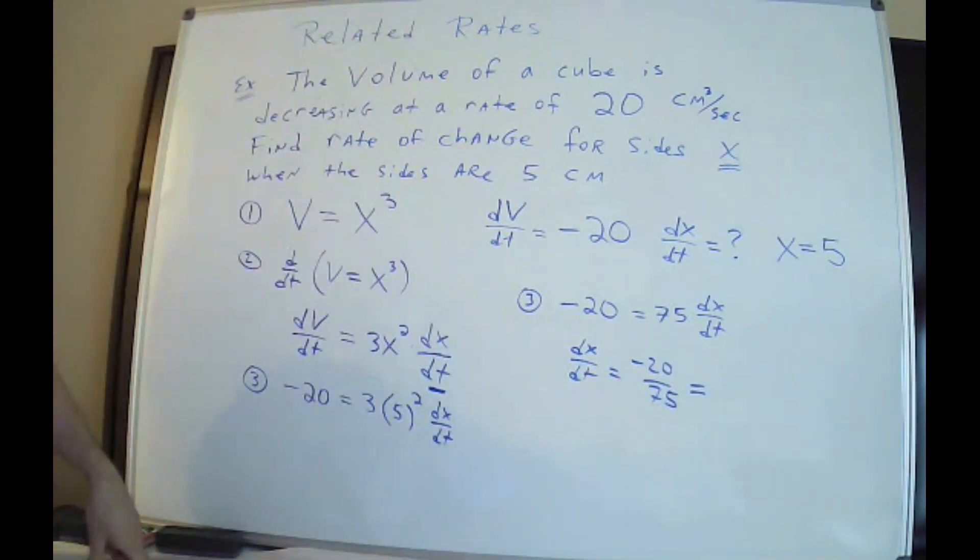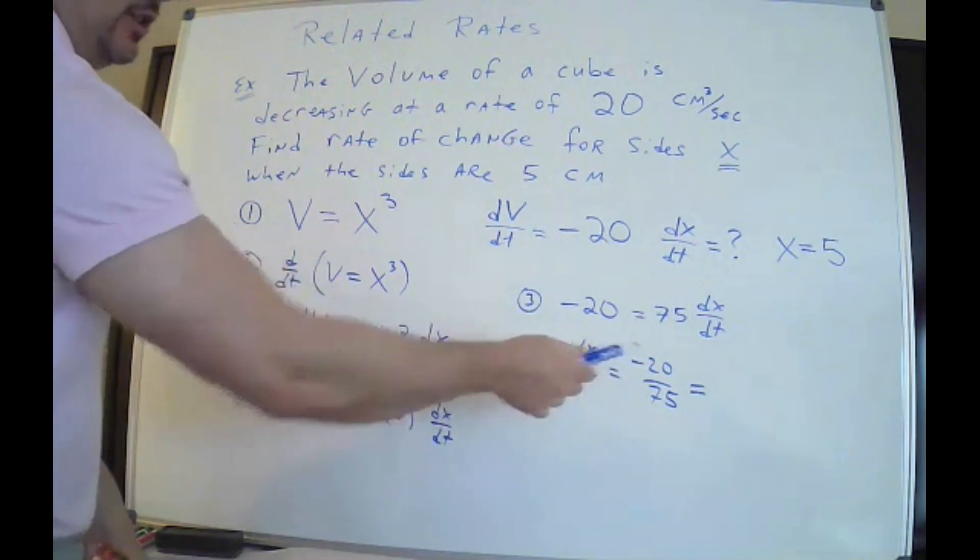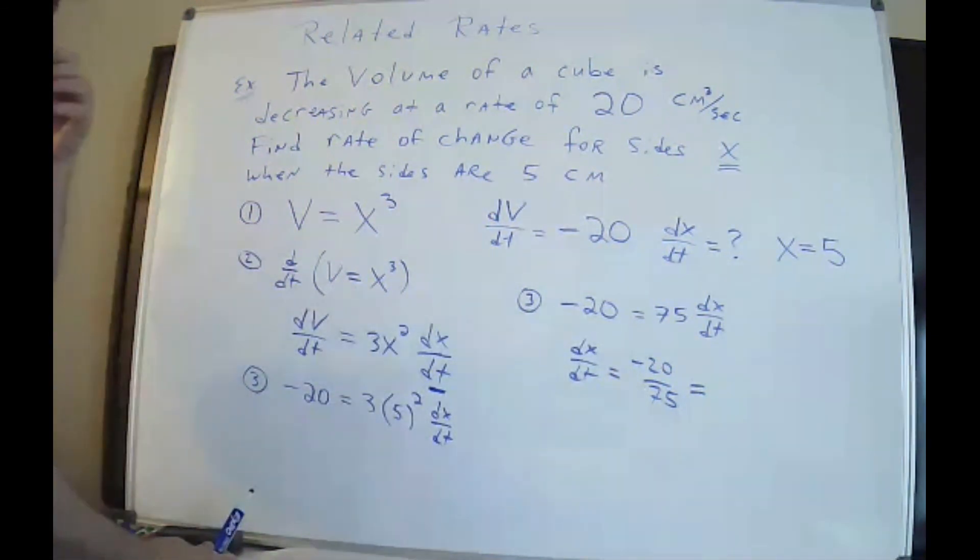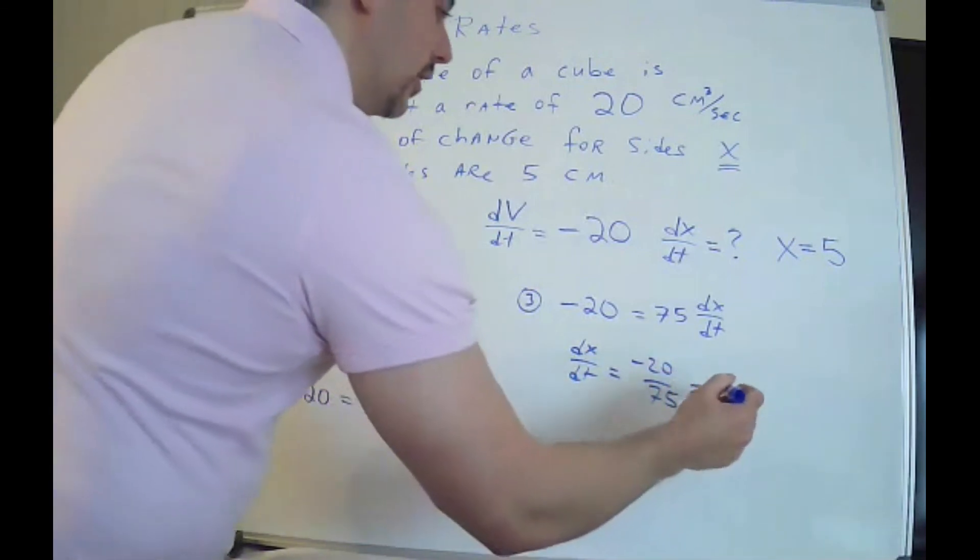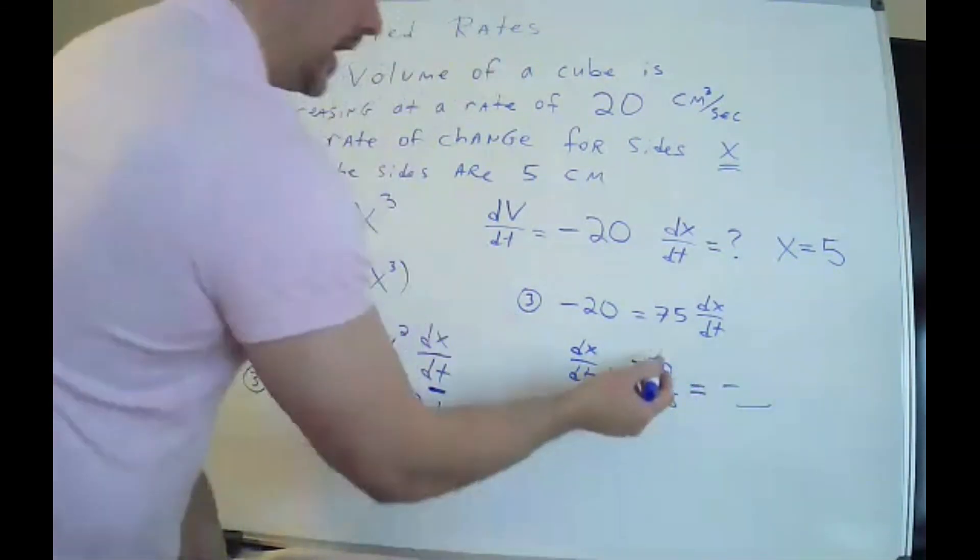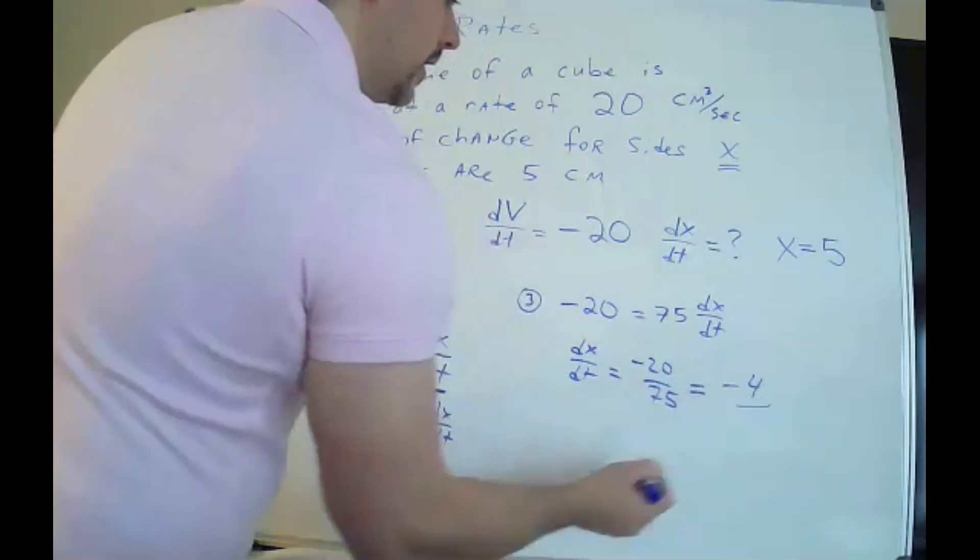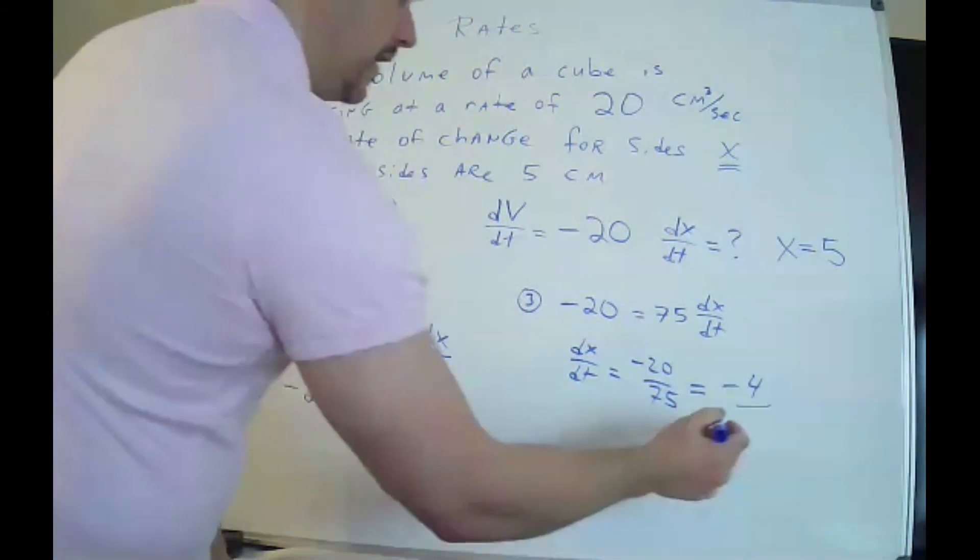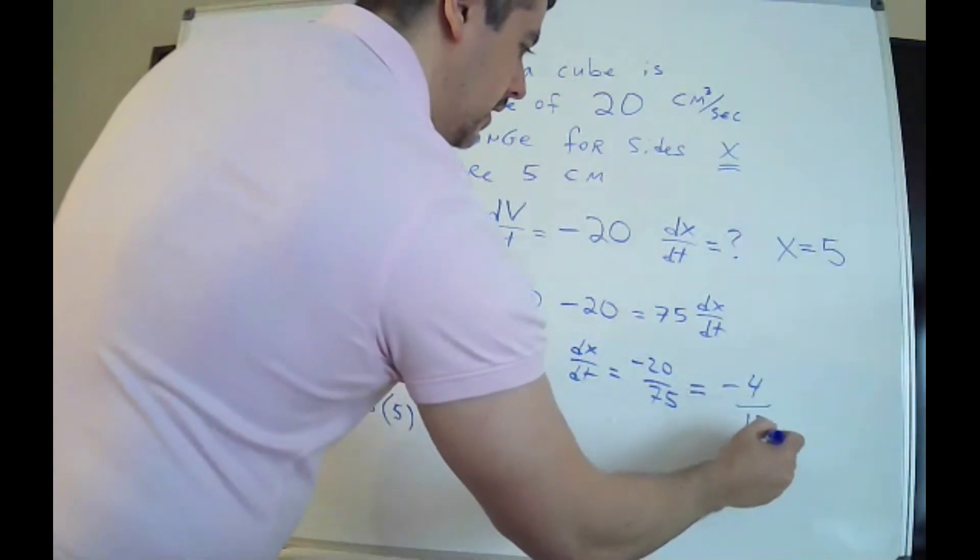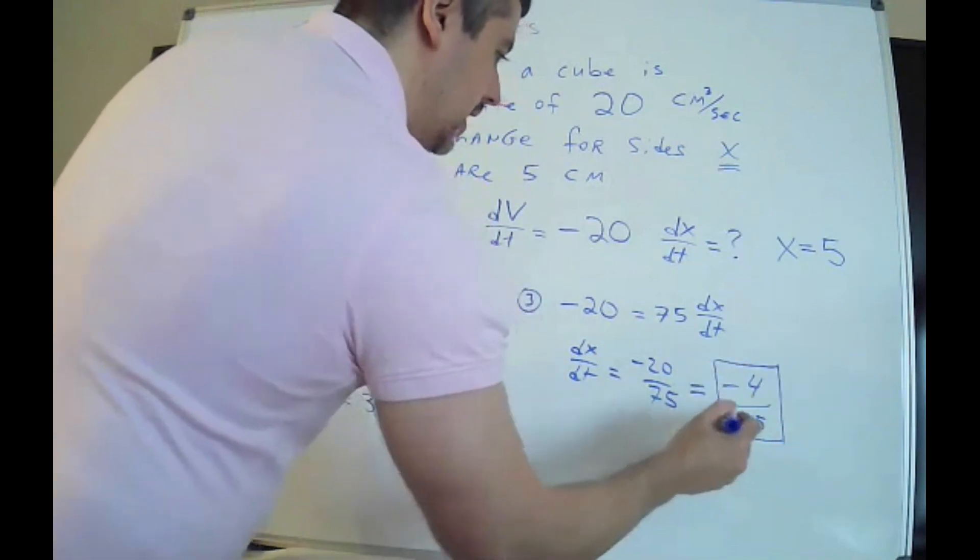Now, I'm not giving you a calculator. So if I'm grading you and all of a sudden I see you give me a decimal here, I'm going to be really unhappy and confused. So let's see. I can divide them both by 5. 20 divided by 5 is 4. And let's see. 75 divided by 5 is 15, I believe. Now, does it make sense that my answer is negative?